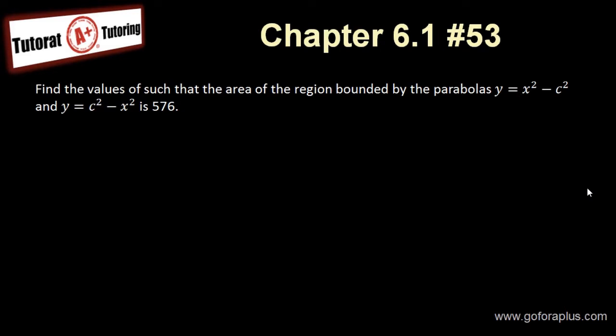Now the question is to find the value such that the area of the region bounded by the parabola y equal to x squared minus c squared, and y equal to c squared minus x squared is 576.